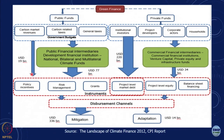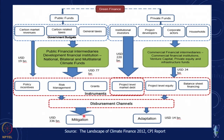As a result of this, we have some risk management, some grants, and some policy instruments. When we talk about institutional investors, we can look at project-level market debt, project-level equity, and balance sheet financing. In terms of private funds, institutional investors, project developers, corporate actors and households can all provide funding. These dispersal channels have been mainly financing mitigation — energy efficiency and renewables projects — but also a relatively smaller amount going into adaptation.